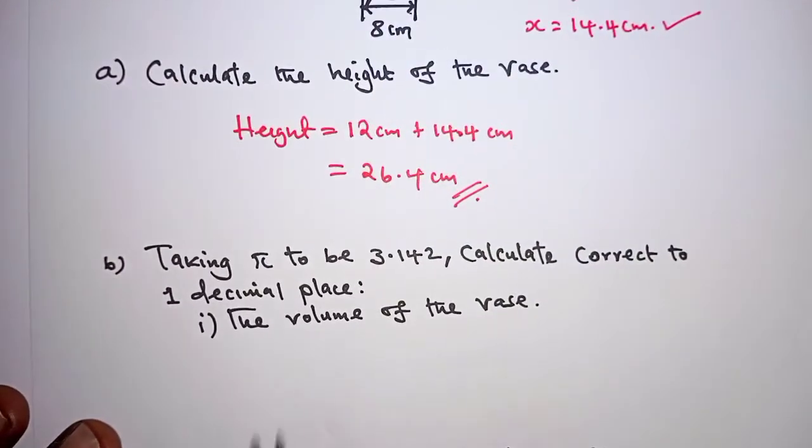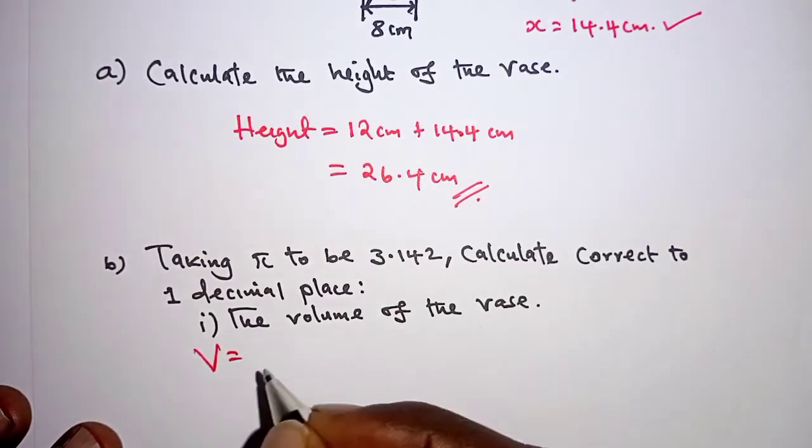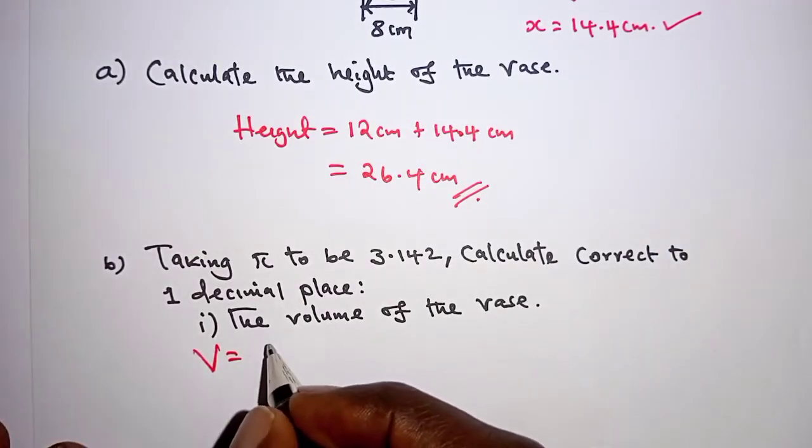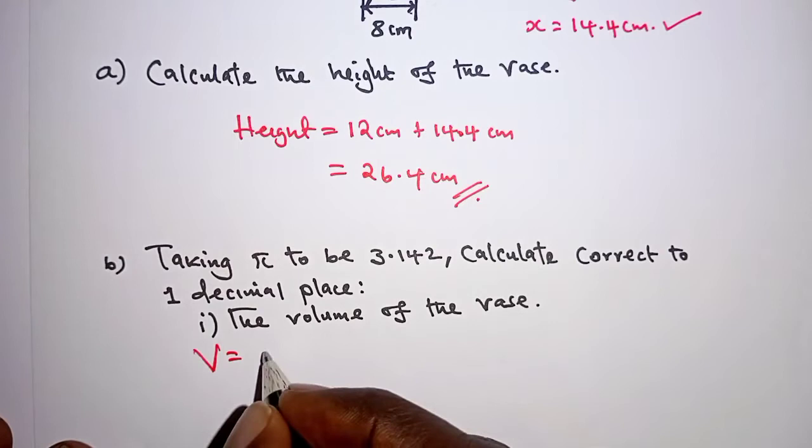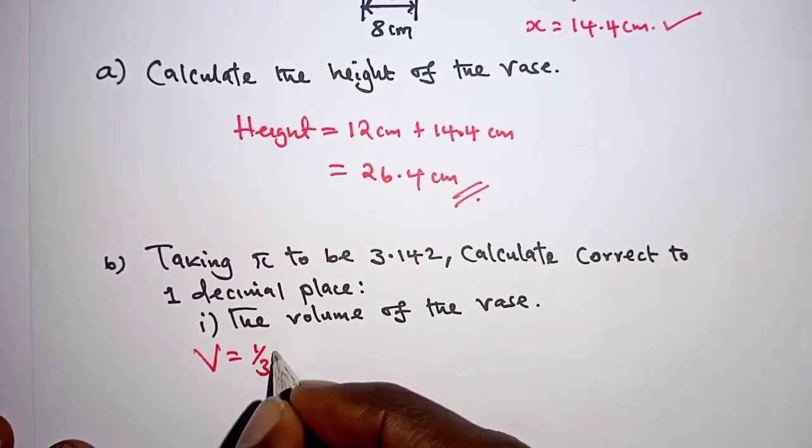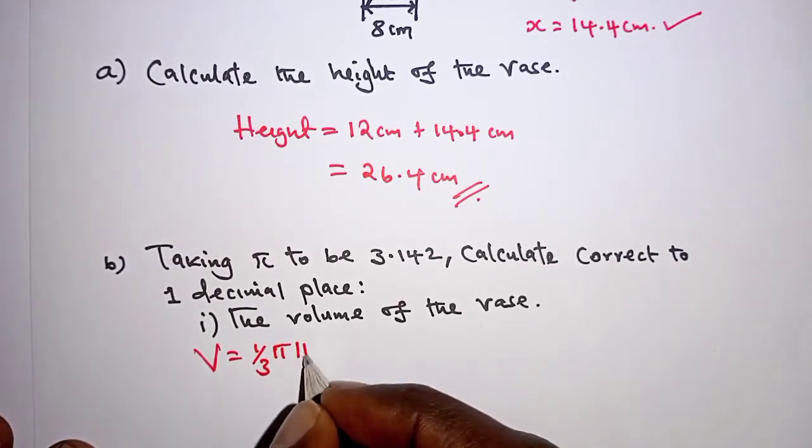the volume of the frustum, so we have the volume, total volume is the volume of the frustum, which you obtain by having a third times pi times the height